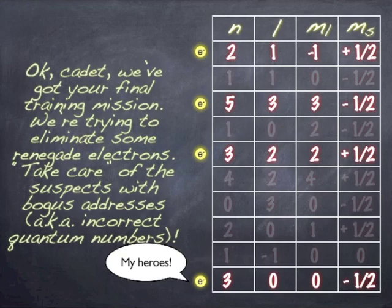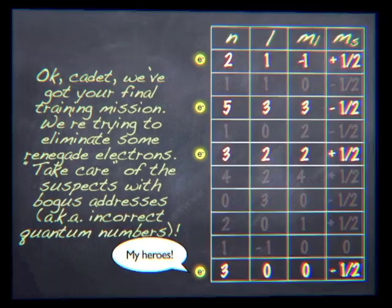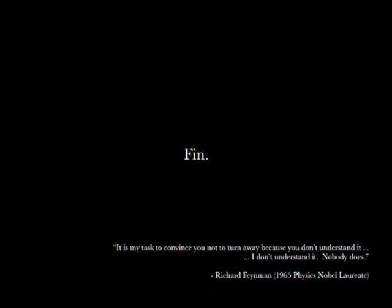And so for quantum numbers, if you can at least look at them and figure out whether or not they are legitimate, you're good to go. So I hope you enjoyed that little jaunt through some quantum number practice. In the next lesson, we'll go on to determine orbital diagrams, which actually build off of our quantum number information. So see you next time. Have a great day.